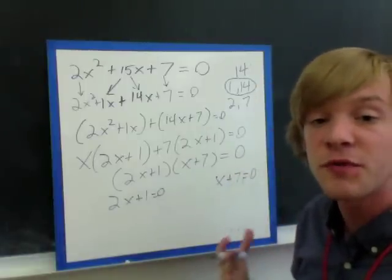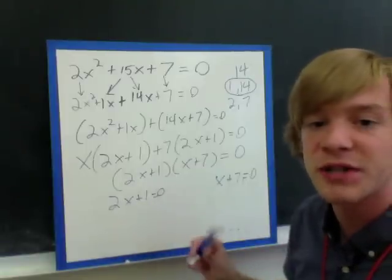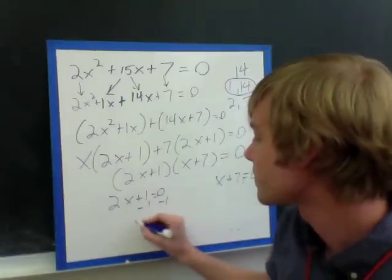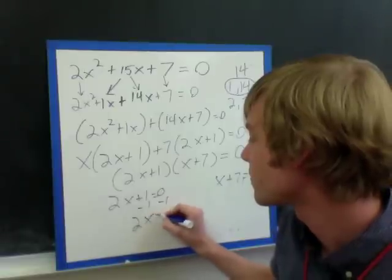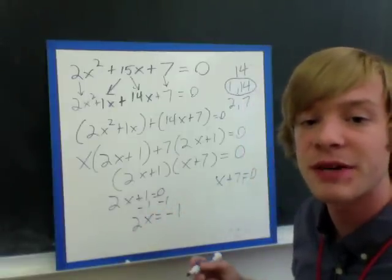So I'm going to solve both of these out for x. With the first one here, I'm going to start by subtracting 1. So I get 2x equals negative 1, and then I'm going to divide by 2.